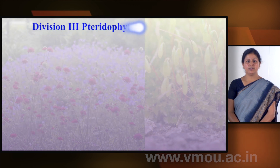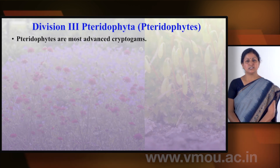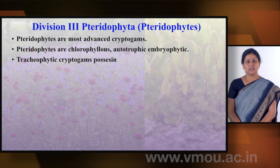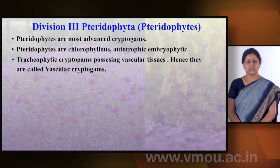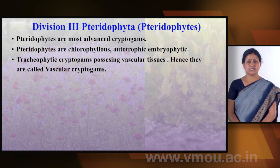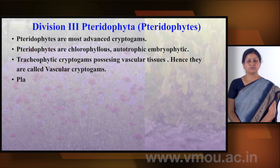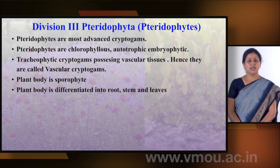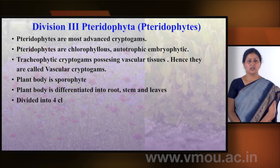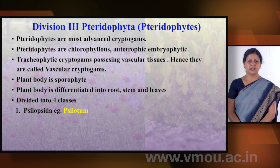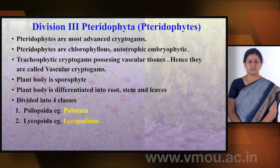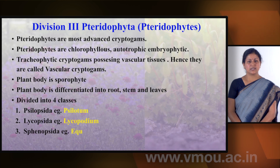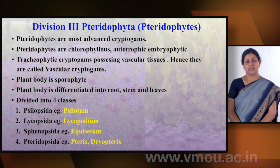The third division is Pteridophyta. They are the most advanced cryptogams, also called vascular cryptogams or tracheophytic cryptogams, as they have vascular tissue development. They are chlorophyllous and therefore autotrophic. The plant body is sporophytic and is differentiated into root, stem, and leaves. Pteridophytes are divided into four classes: Psilopsida (example: Psilotum), Lycopsida (example: Lycopodium), Sphenopsida (example: Equisetum), and Pteropsida (example: Pteris and Dryopteris).